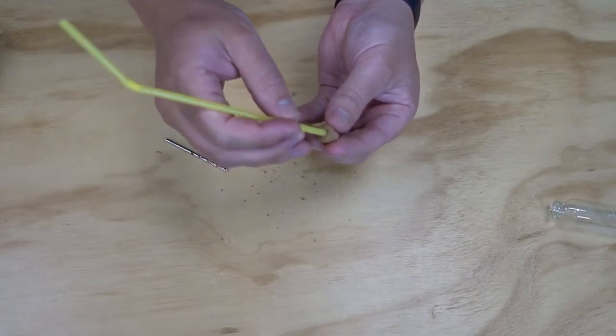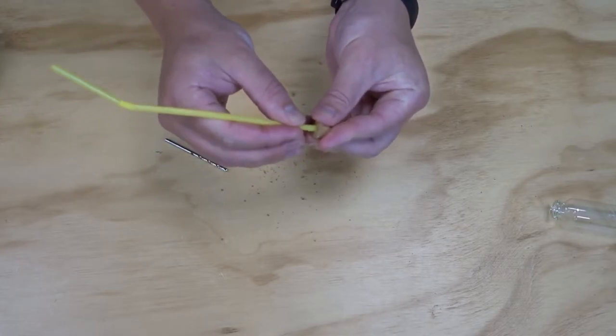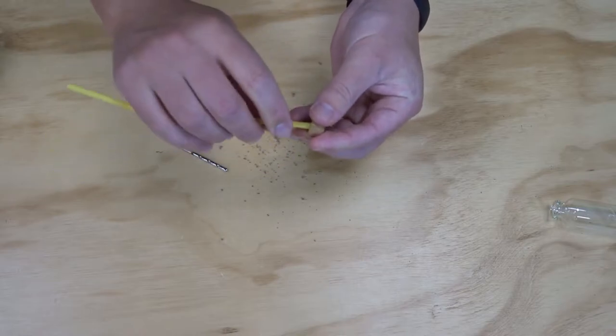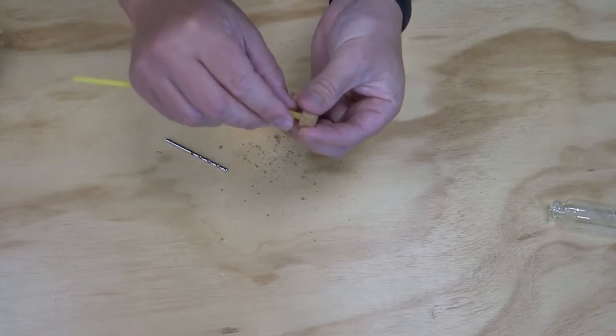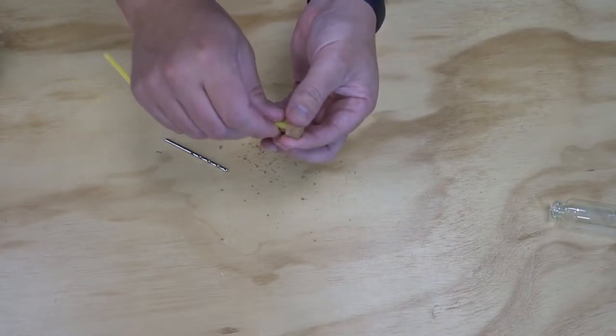Once you've got the hole in your lid, you need to make sure that your straw is going to fit through nicely, that it's not going to be pinched closed, because we need liquid to be able to get through our straw. If it's not quite big enough, just use the drill bit to make the hole slightly larger.